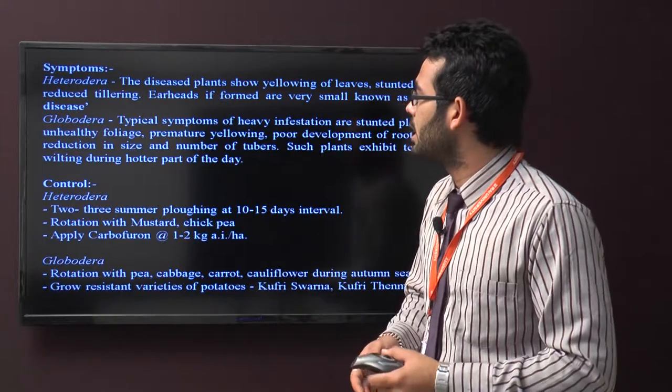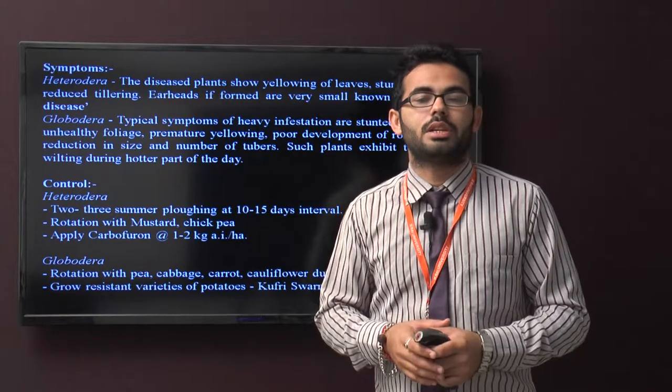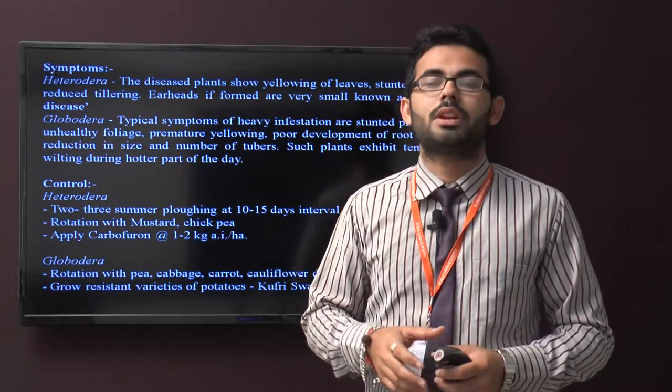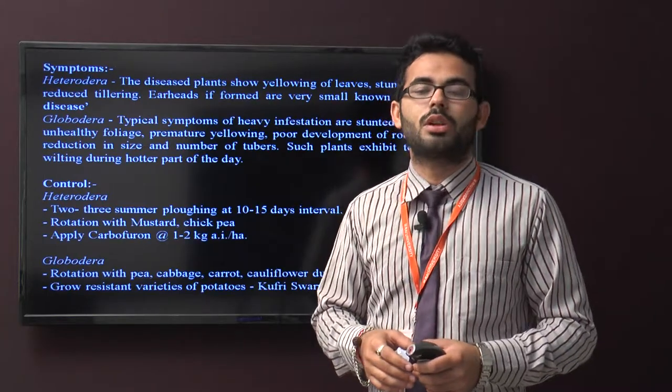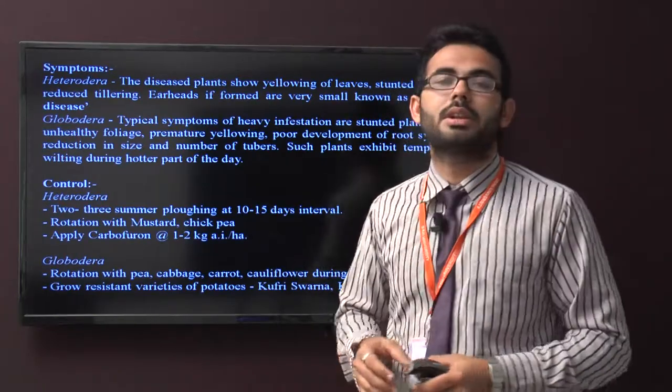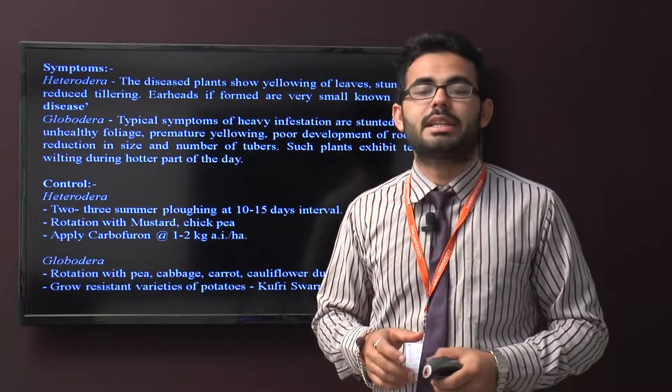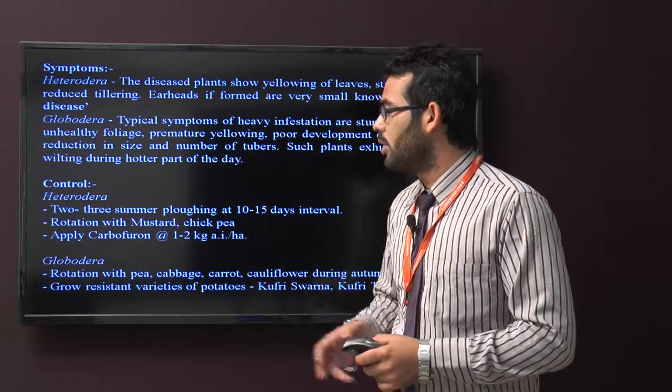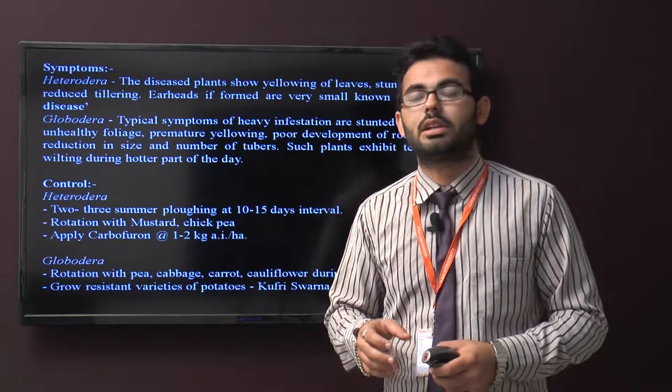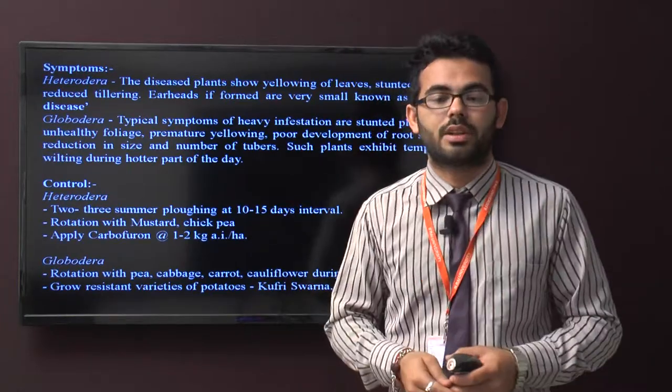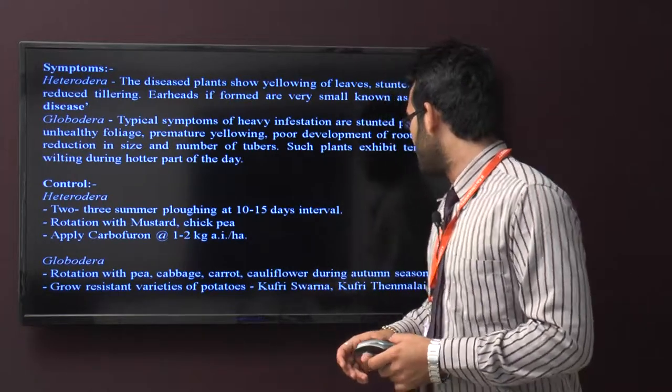In Globodera species, typical symptoms include heavy infestation, stunted plants with unhealthy foliage, premature yellowing, and poor root system development. Control includes two to three summer deep plowings at 10 to 15 day intervals, rotation with mustard and chickpea. For Globodera, rotate with pea, cabbage, and other crops. Grow resistant varieties of potato like Kufri Swarna and Kufri Jyotimai.